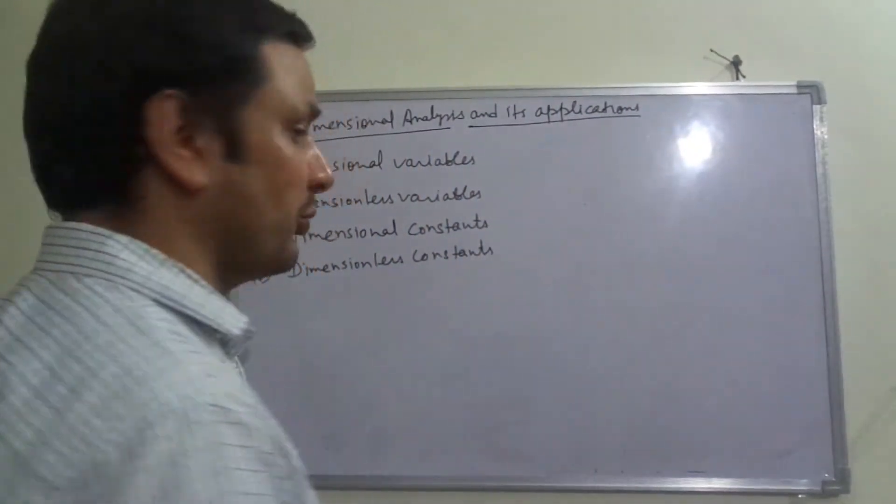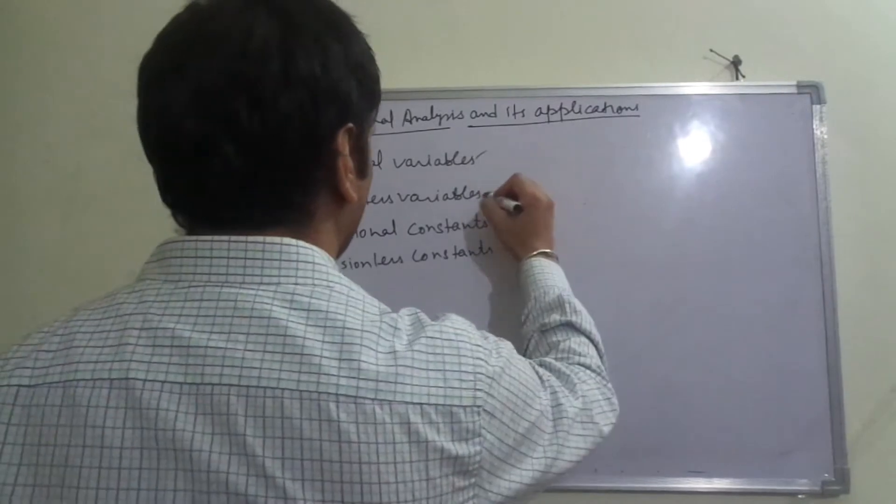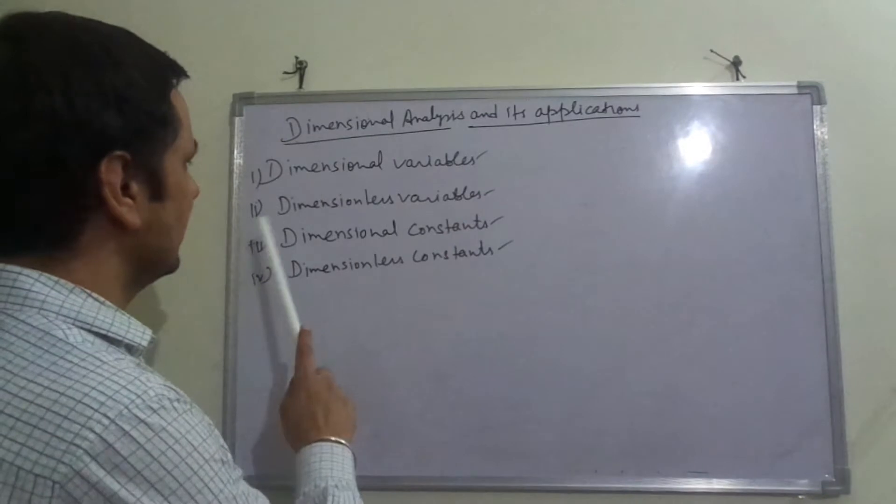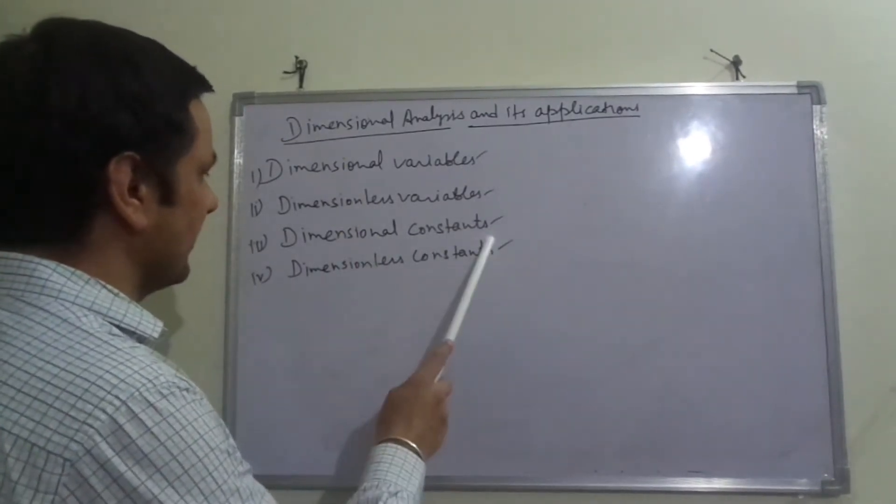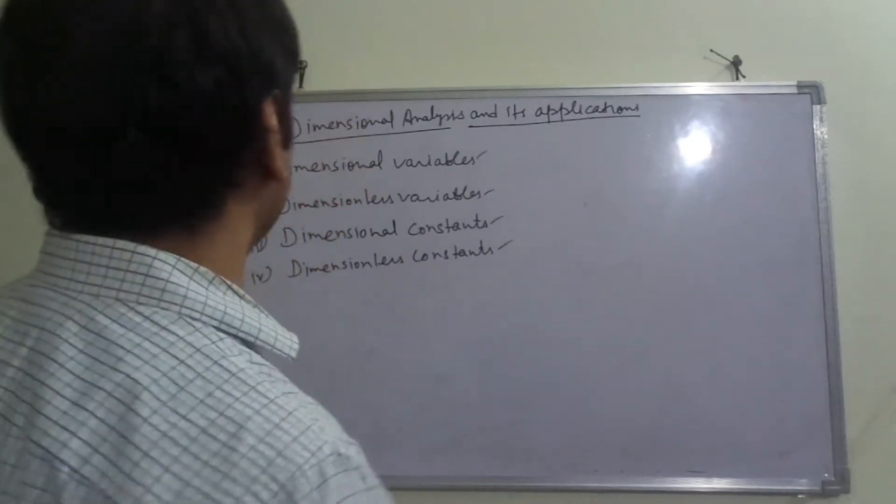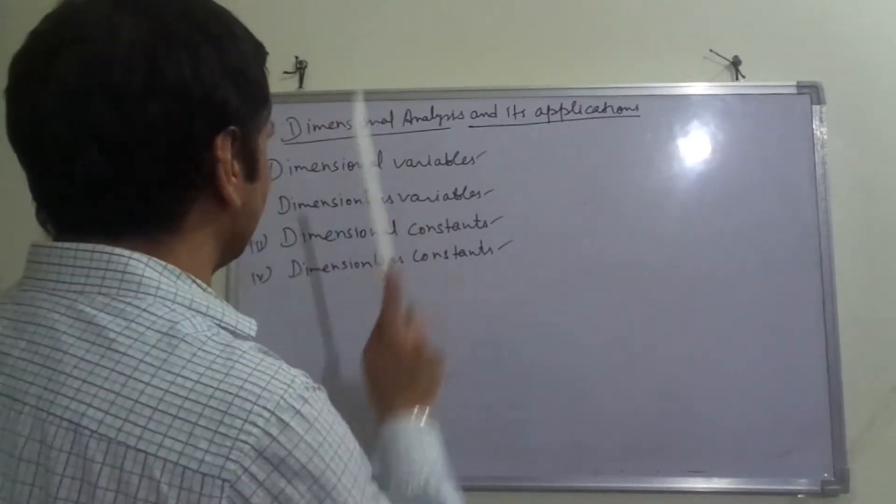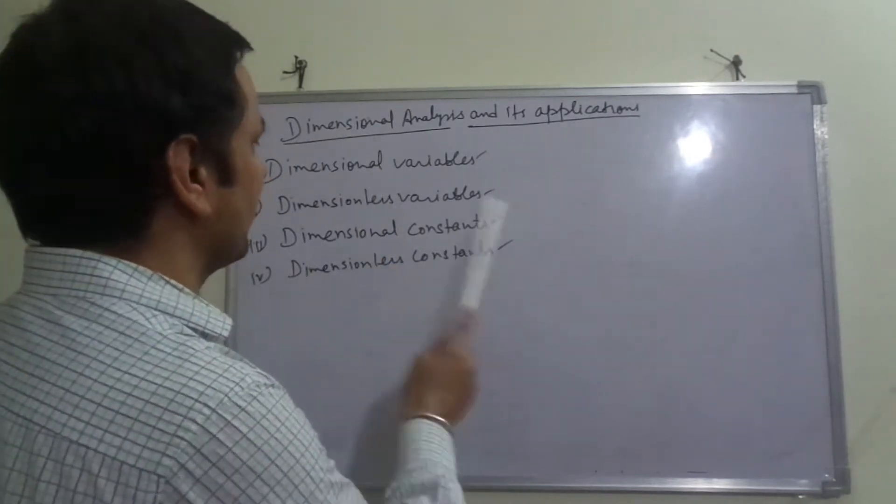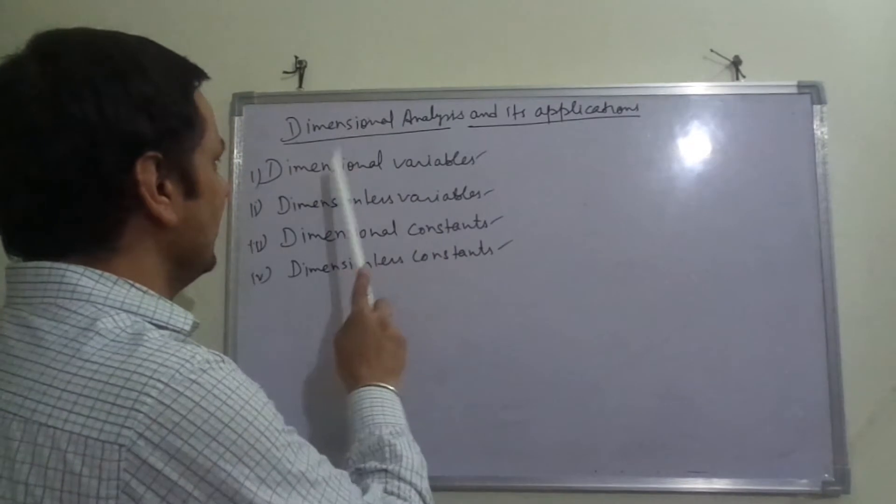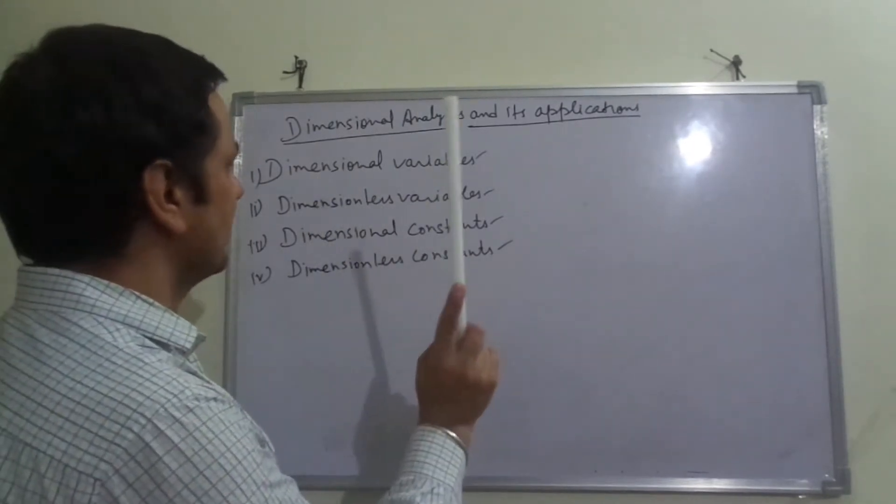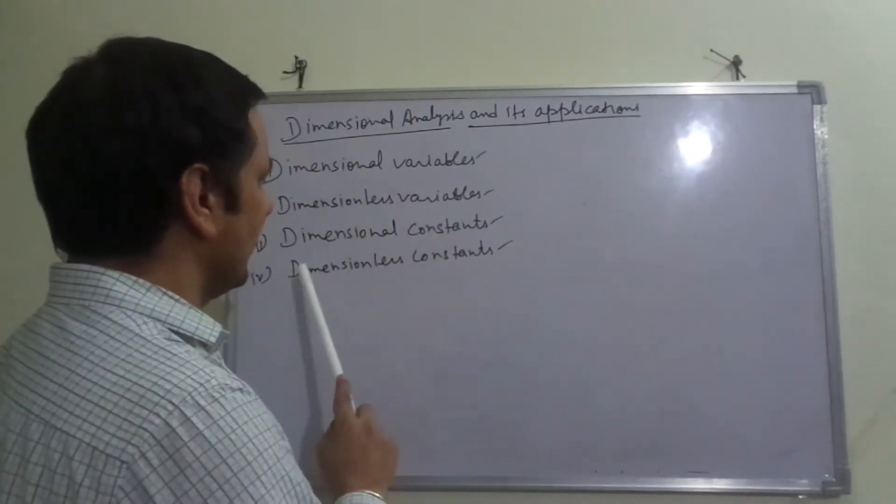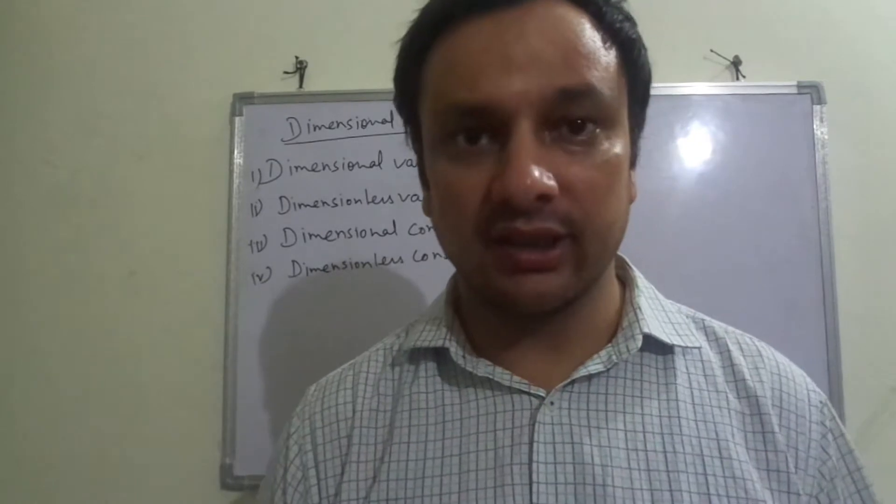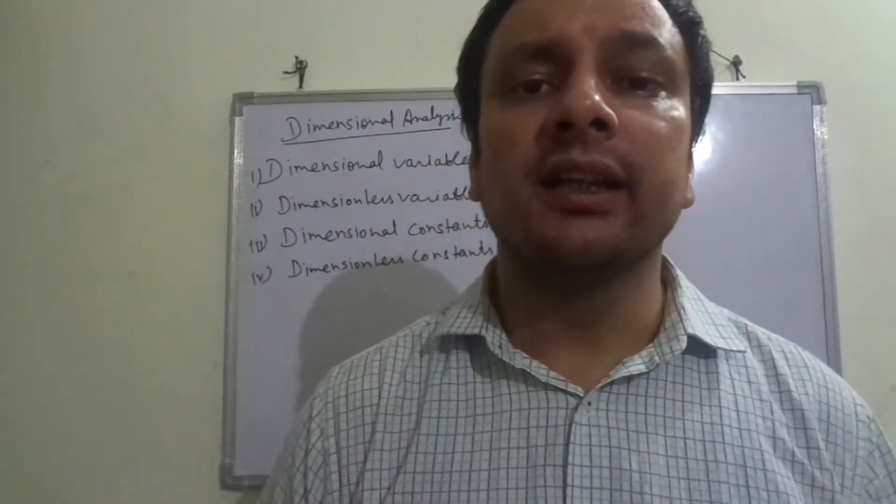Before proceeding, we should be aware about these four quantities: dimensional variables, dimensionless variables, dimensional constants, and dimensionless constants. What is a variable?